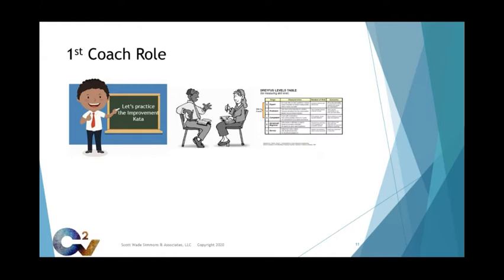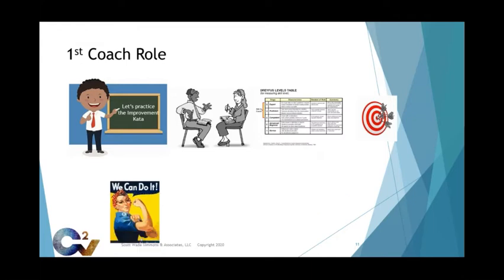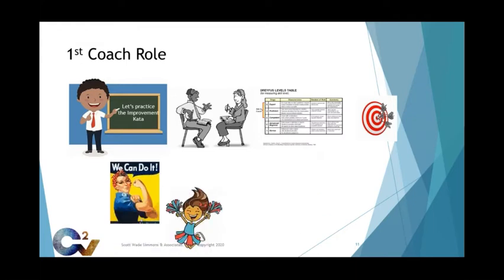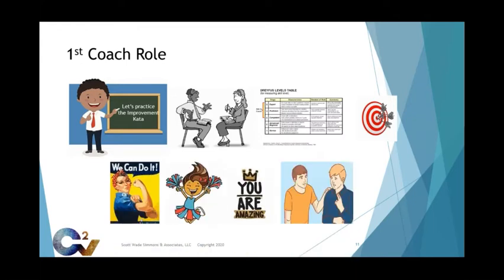As the learner and first coach work together, the first coach should always keep the overall challenge and target conditions in mind to help guide the learner as they're moving through the improvement kata. Remember, coach is responsible for the result. Finally, the first coach is the role of champion, cheerleader, celebrator, listener, and friend. This is empathy, something we all practice more, and is what I talk about in a pre-webinar titled, What's Love to Do With It?